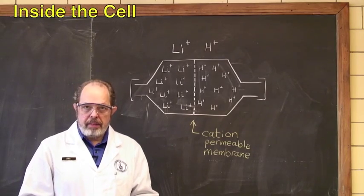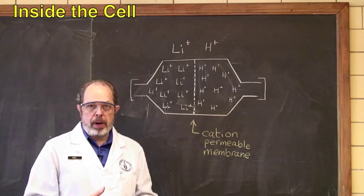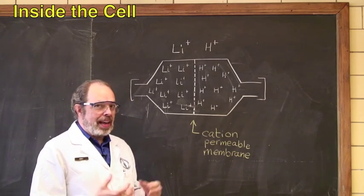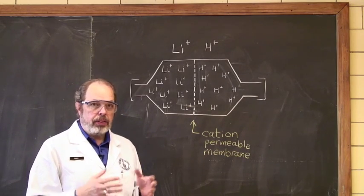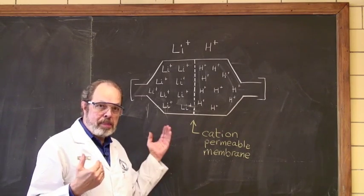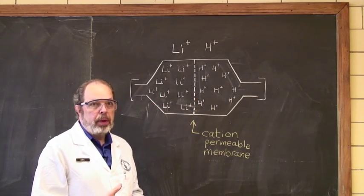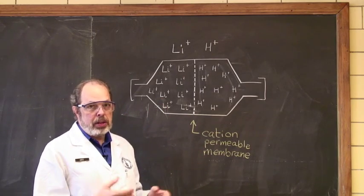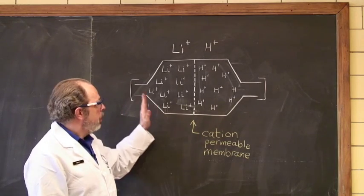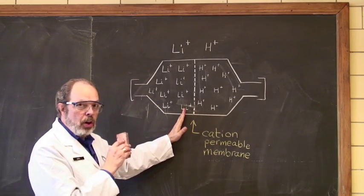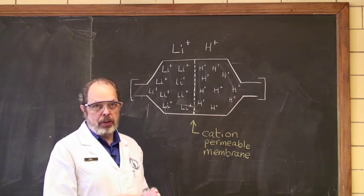The cell that you have contains a cation permeable membrane in the middle. This means that the anions aren't going to be able to get through, and you will be tracking the passage of metal cations through the membrane itself. I'm going to give an example using lithium, but you'll be using other metals as well. We start off with lithium chloride solution on one side of the membrane, and the other side filled with hydrogen chloride hydrochloric acid.